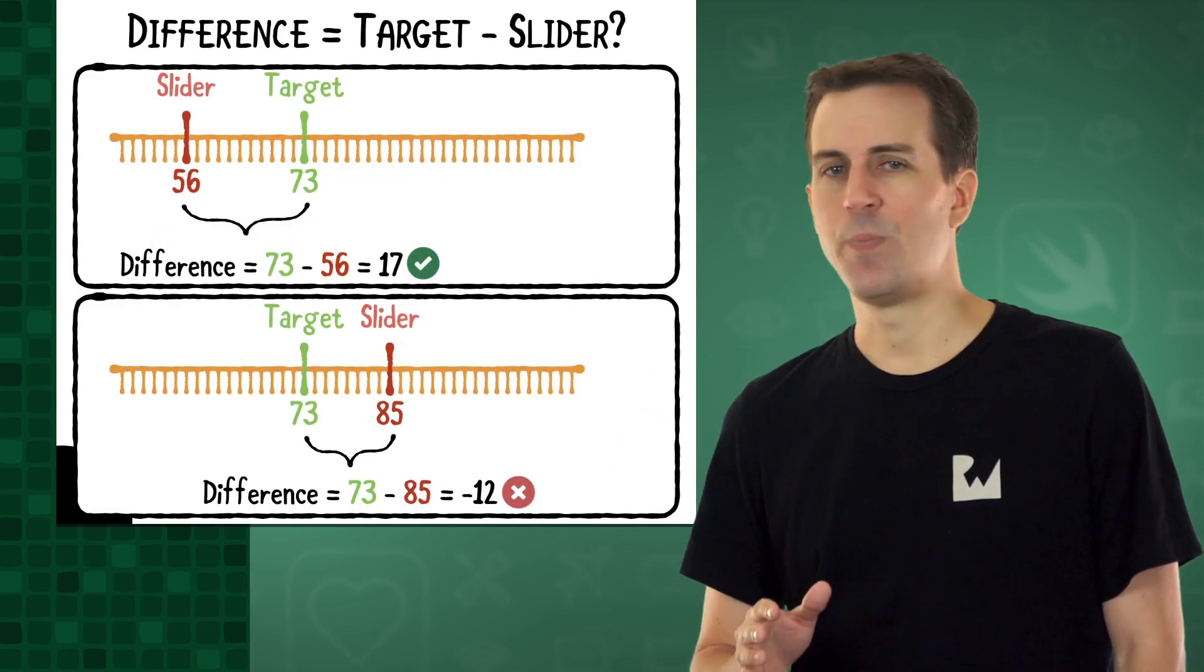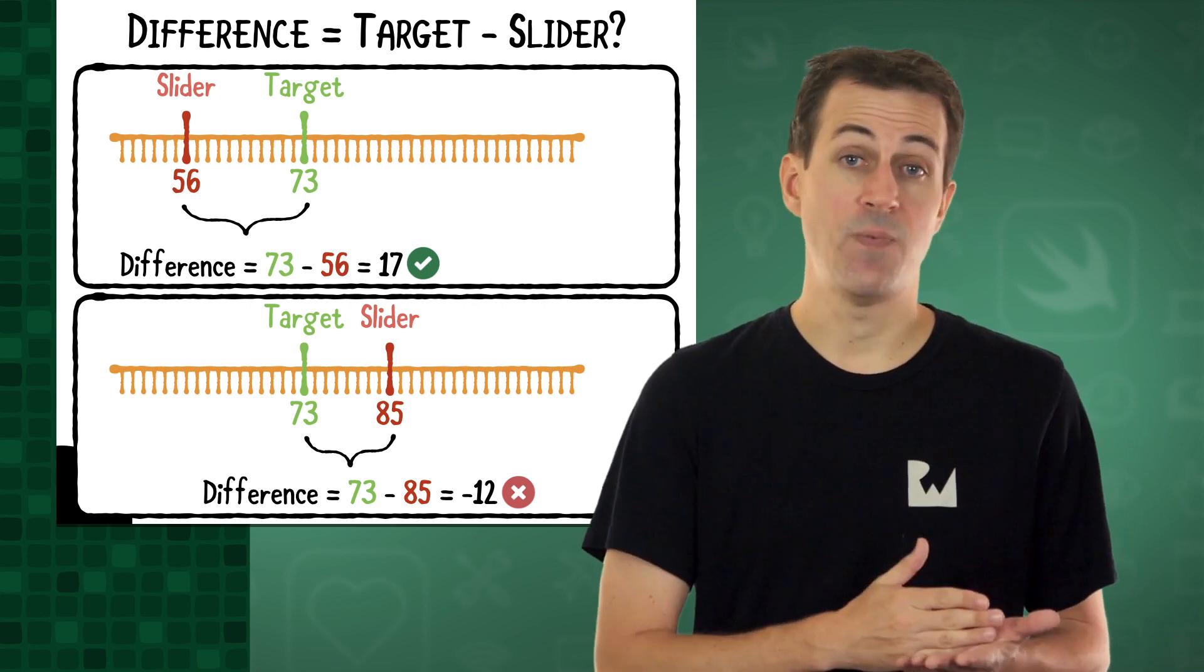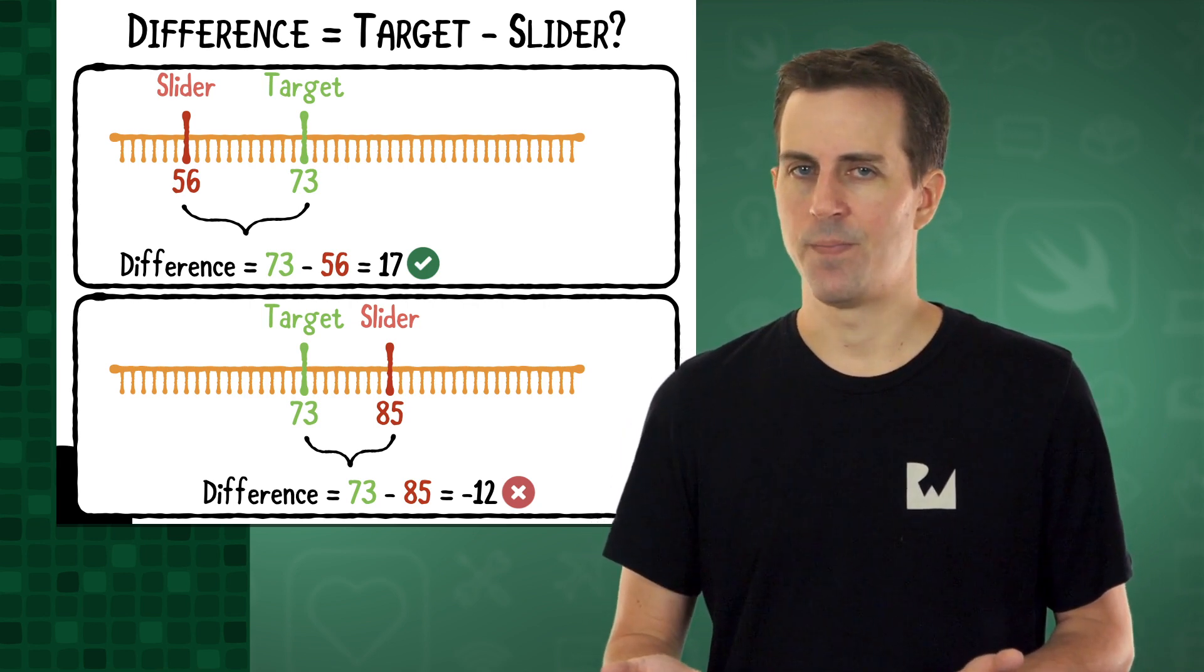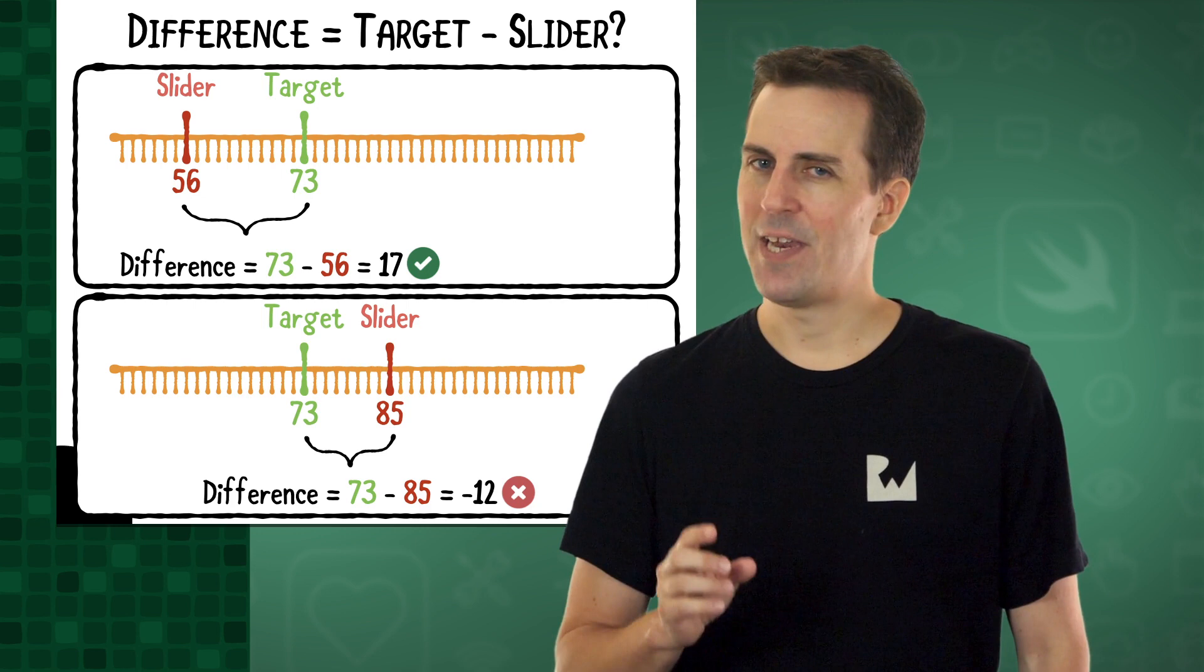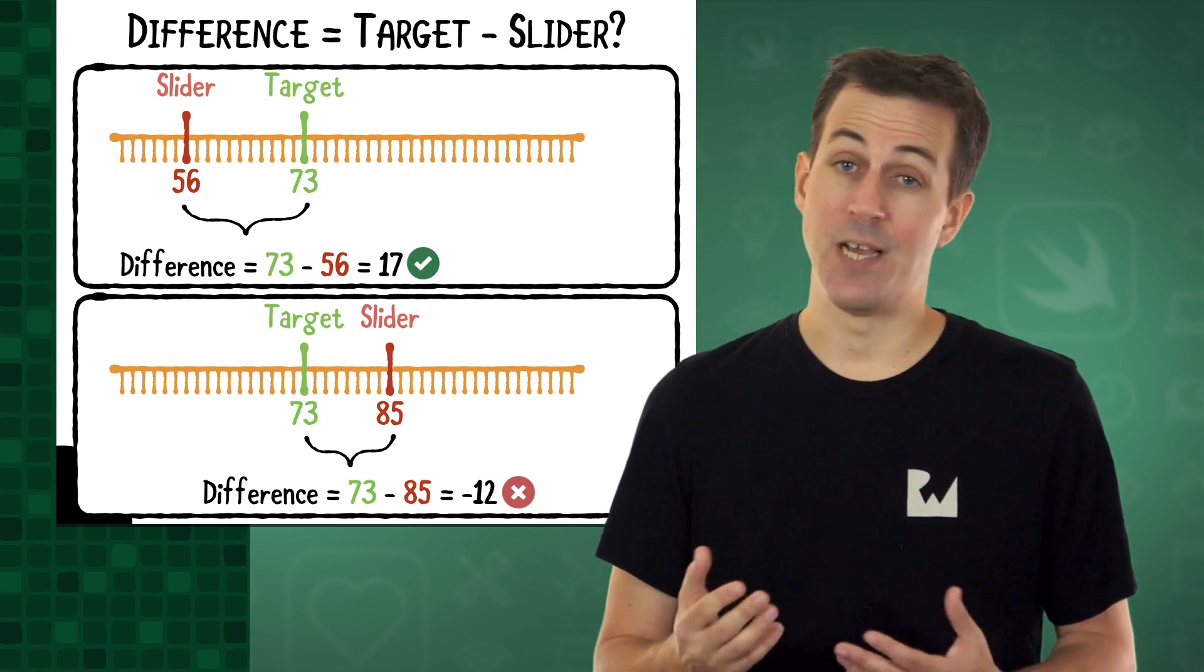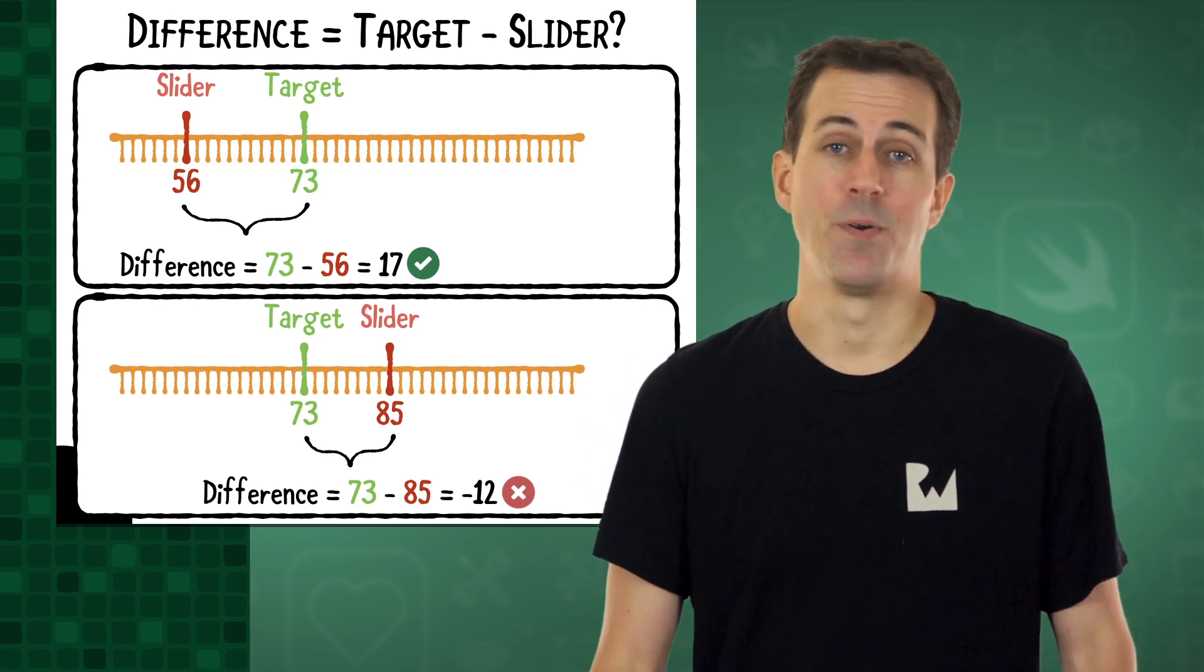A simple approach would be to say that the difference is the target's value minus the slider's value. That works fine in the first case, however, it doesn't work as well in the second case because you would get a negative number.